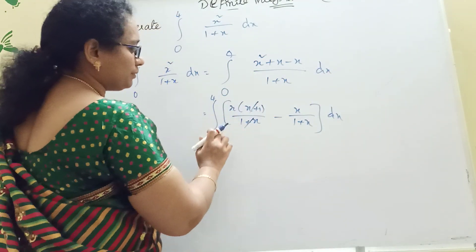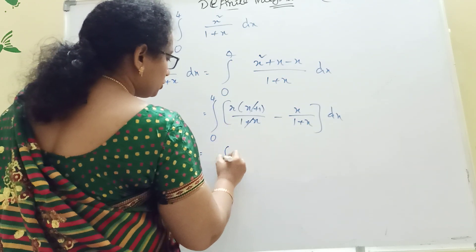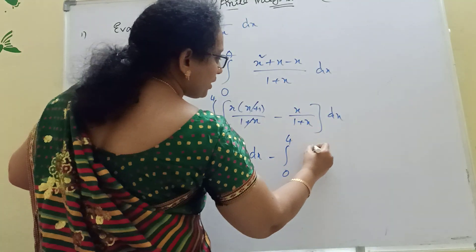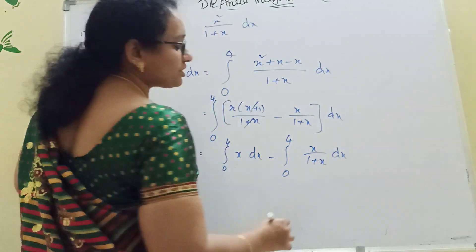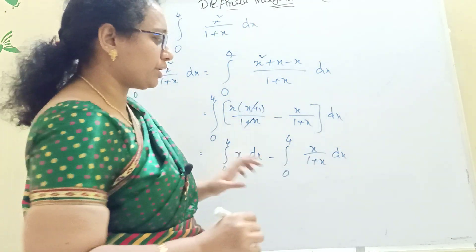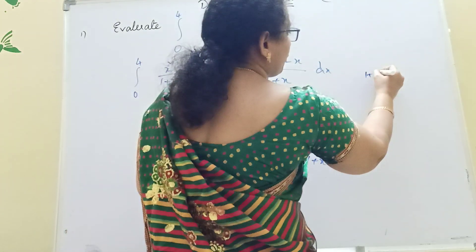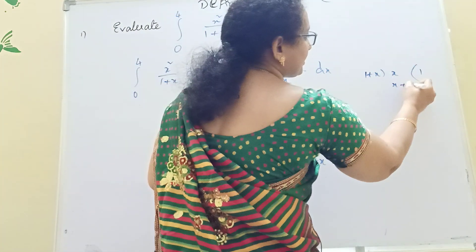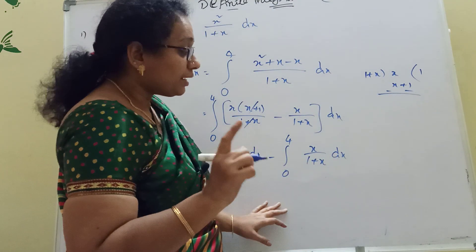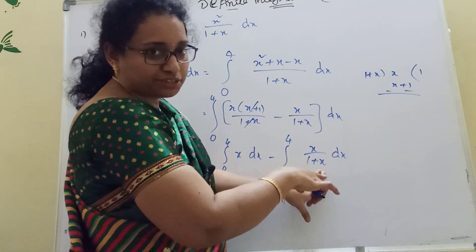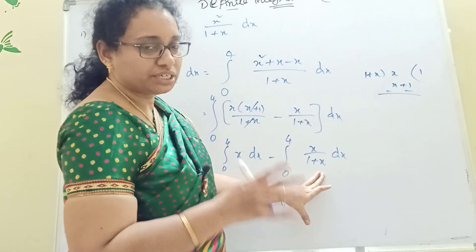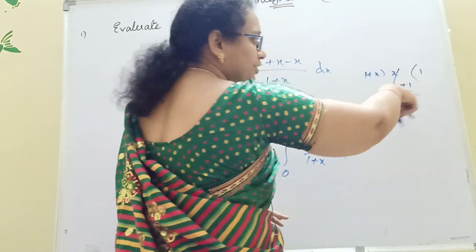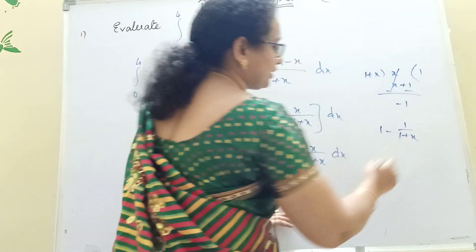Only x remains after cancellation. Since the degree of the numerator and denominator are the same, we apply partial fractions — this is an improper rational expression. Dividing x squared by (1 plus x) gives x minus 1 plus 1/(1 plus x). So the integrand simplifies to 1 minus 1/(1 plus x).